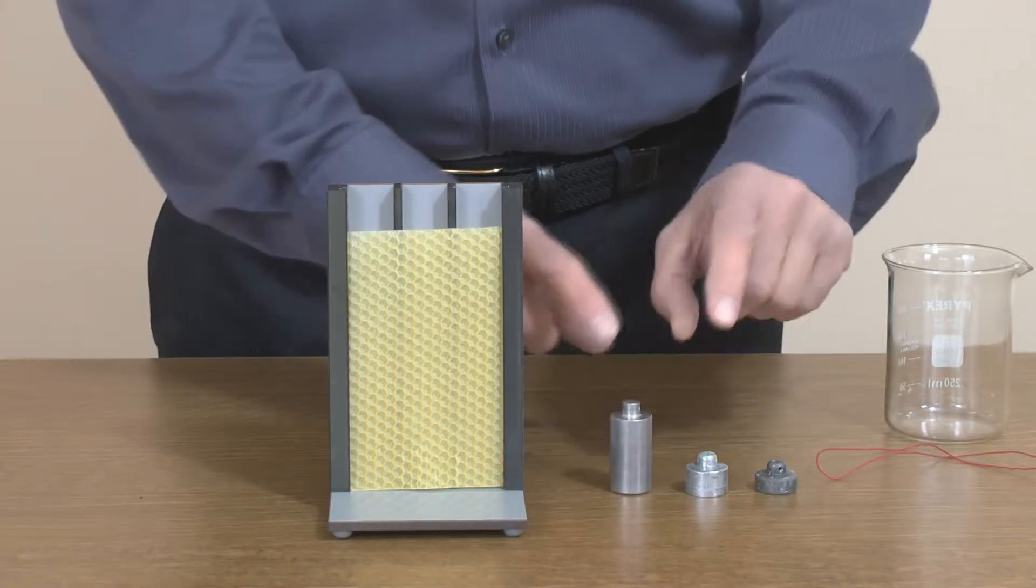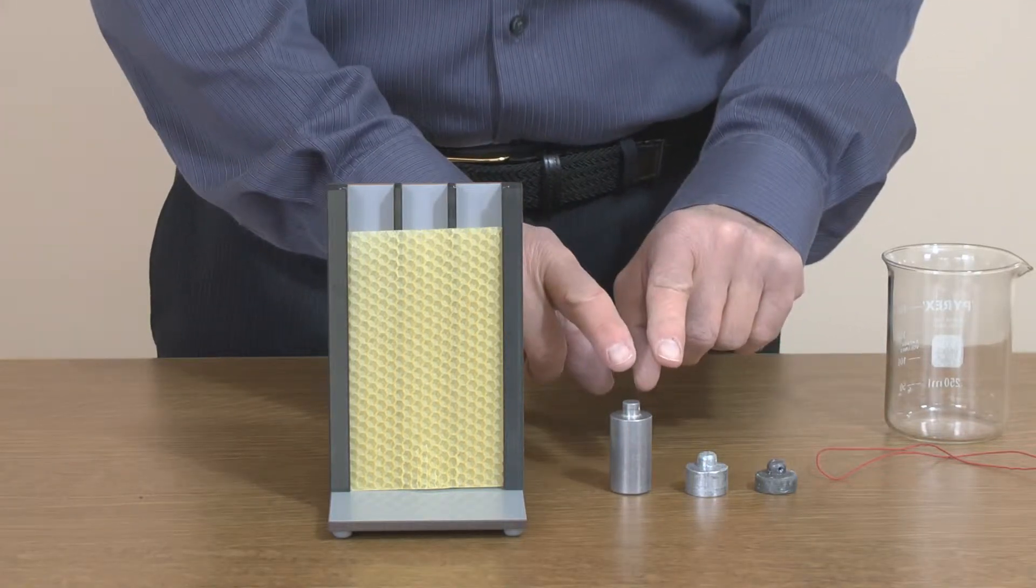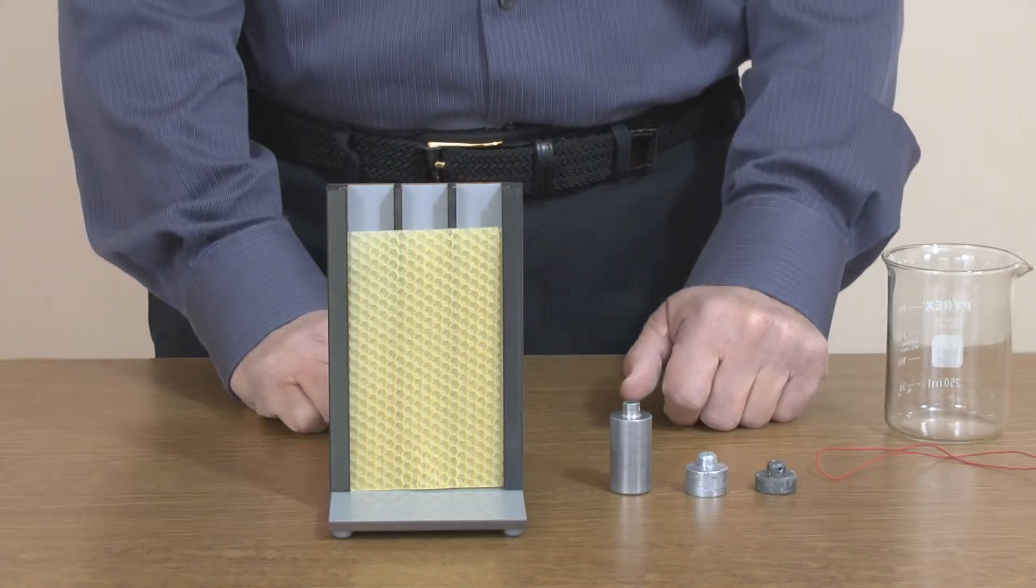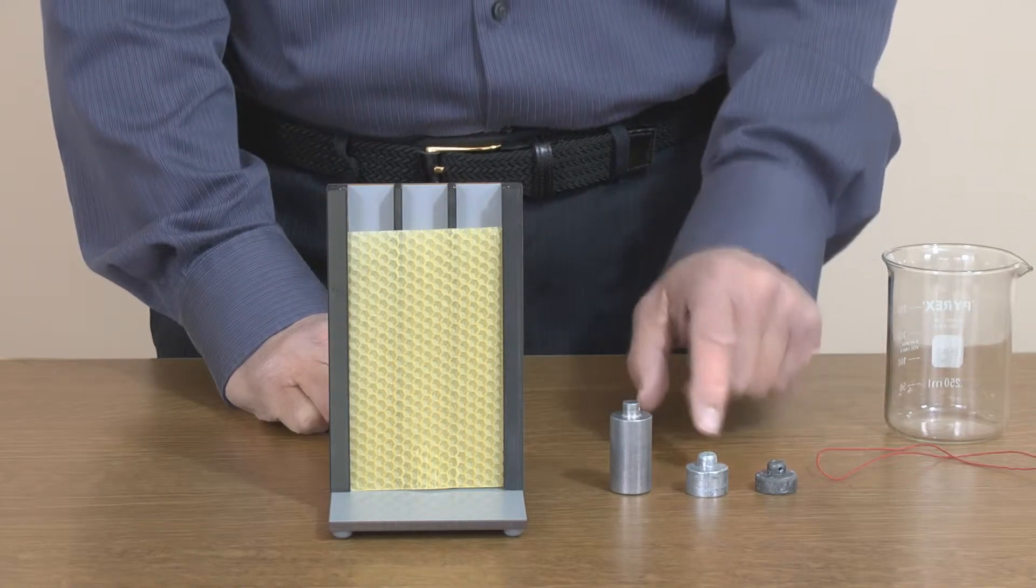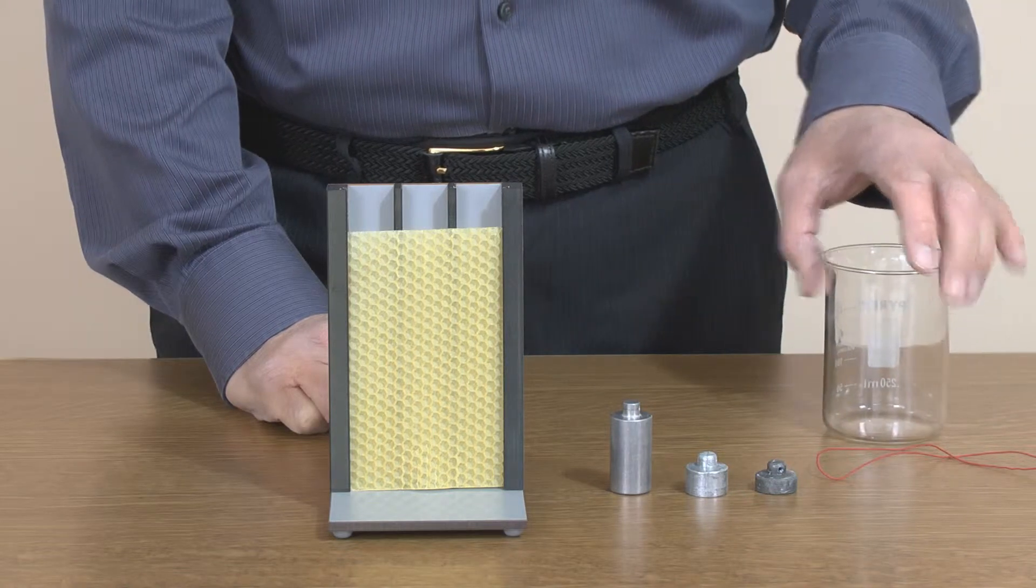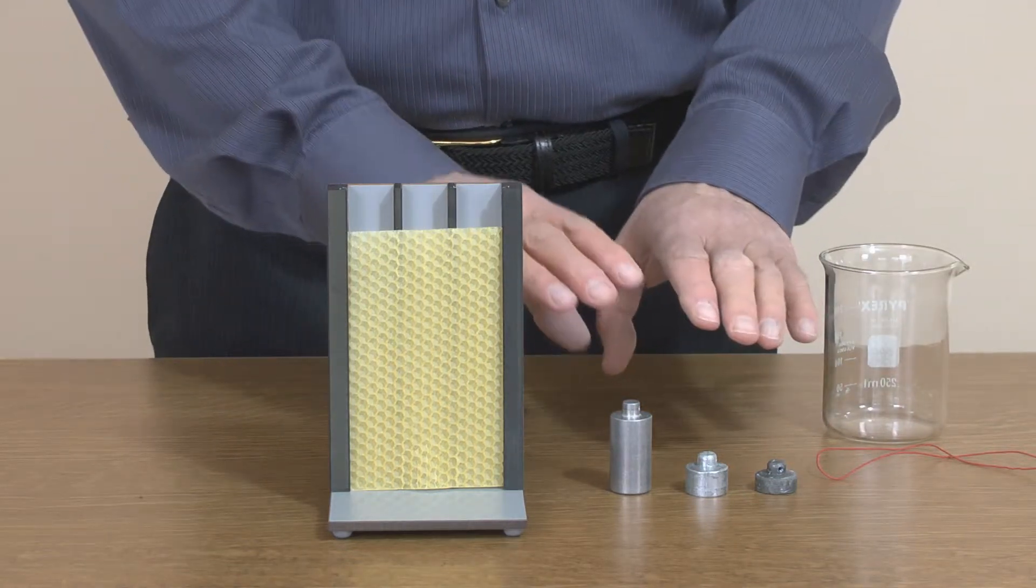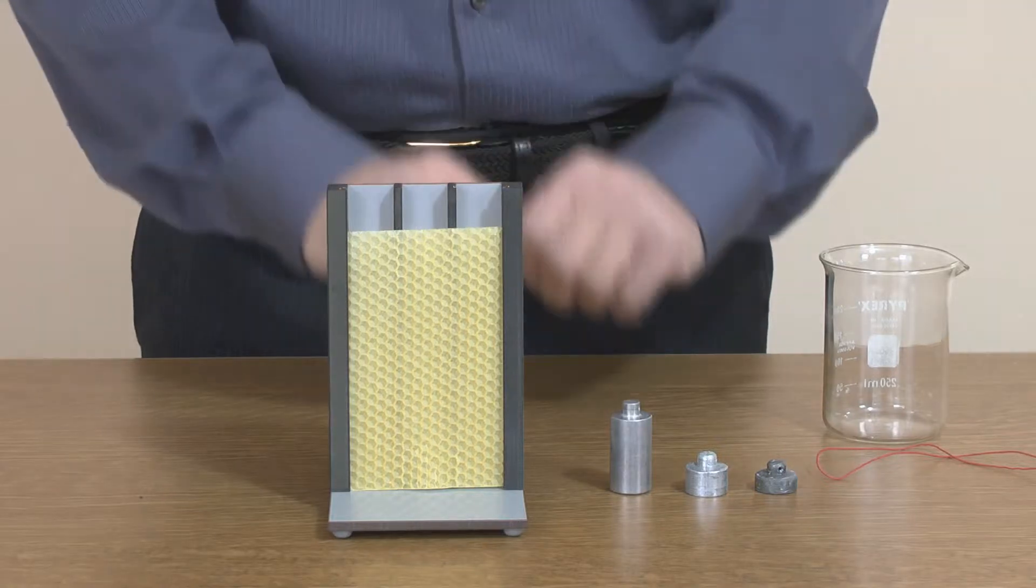Each of these masses has the same cross-sectional area. They are all equal mass but different metals, and what we're going to do is heat them up in boiling water all to the same temperature and then place them on top of the wax.